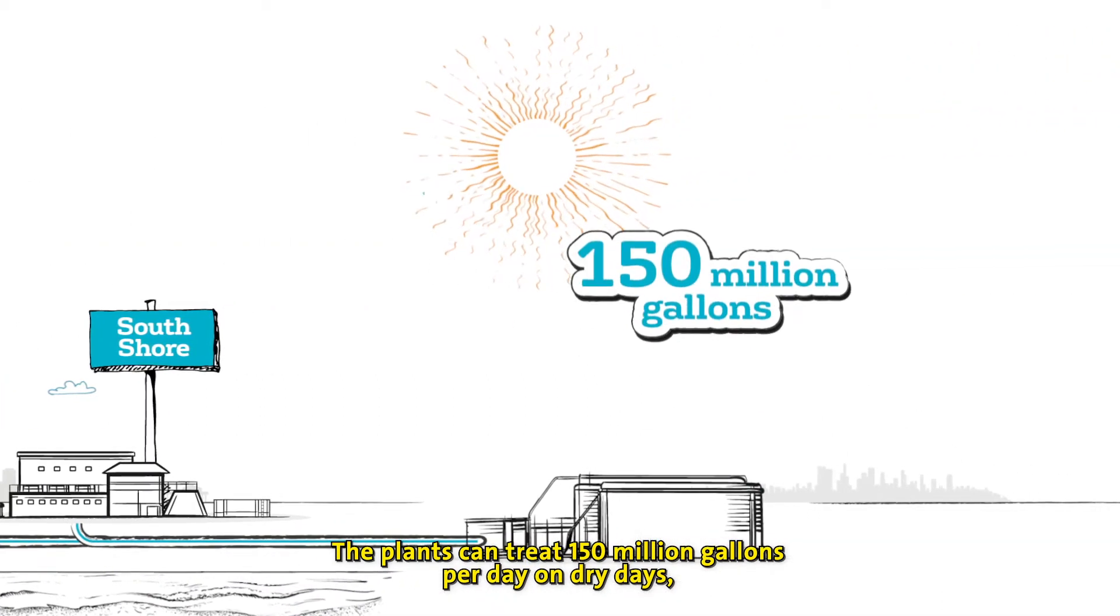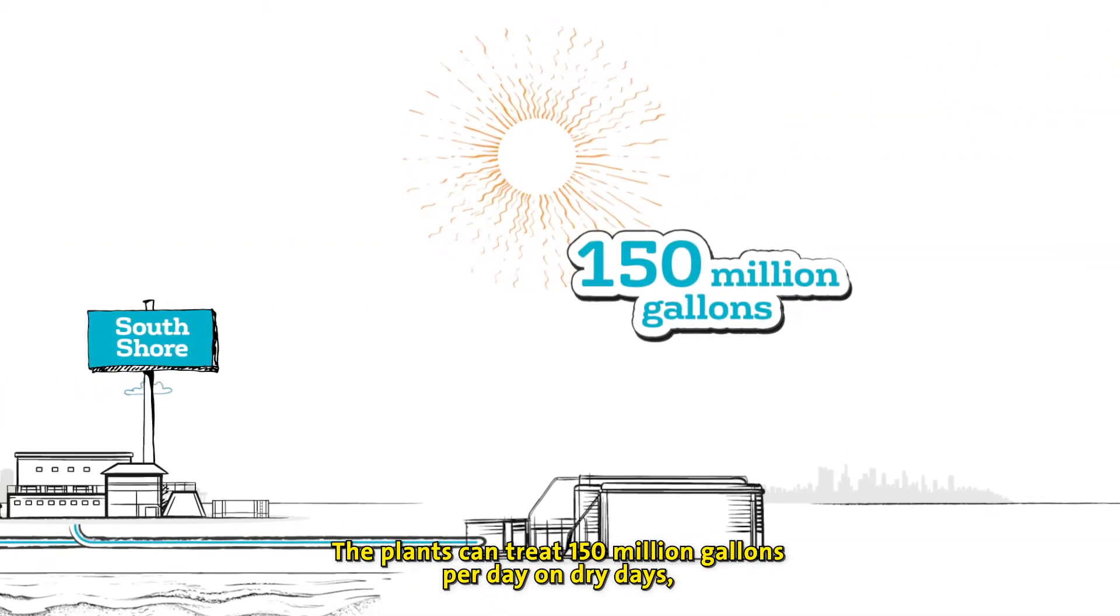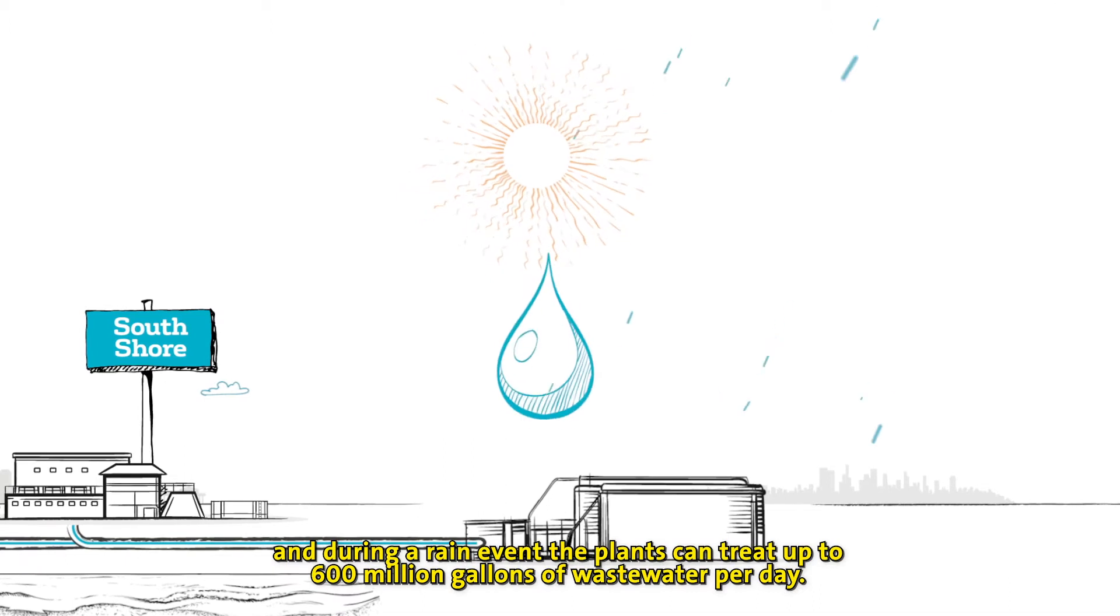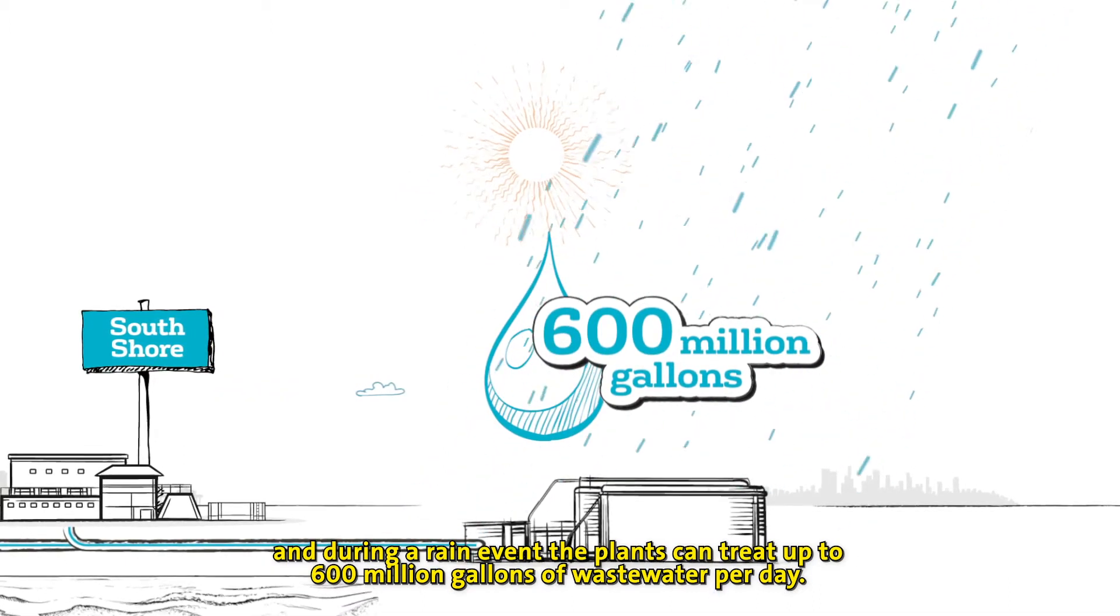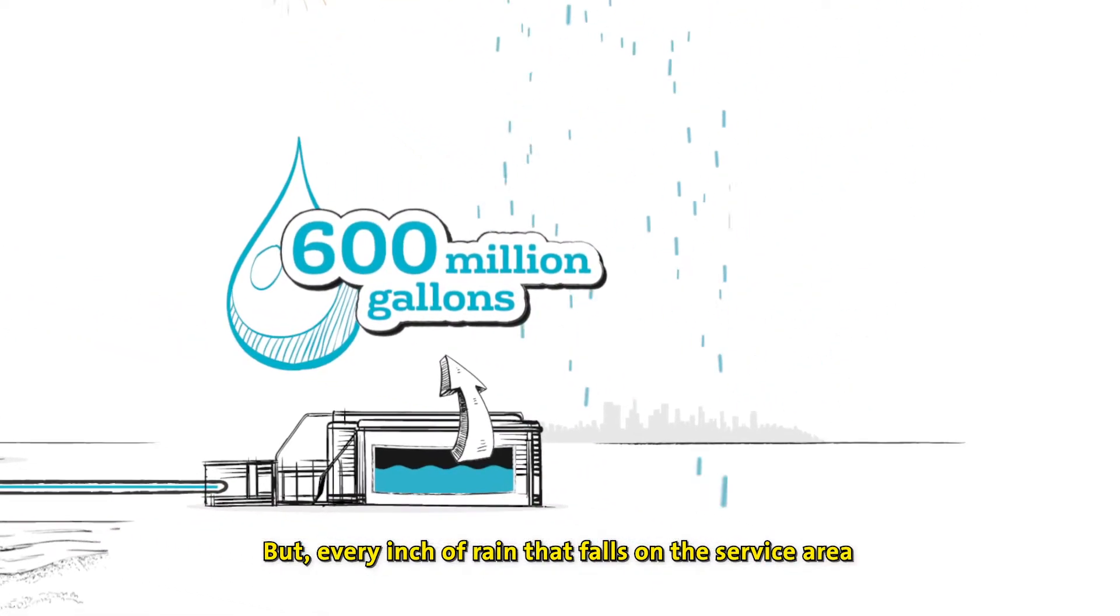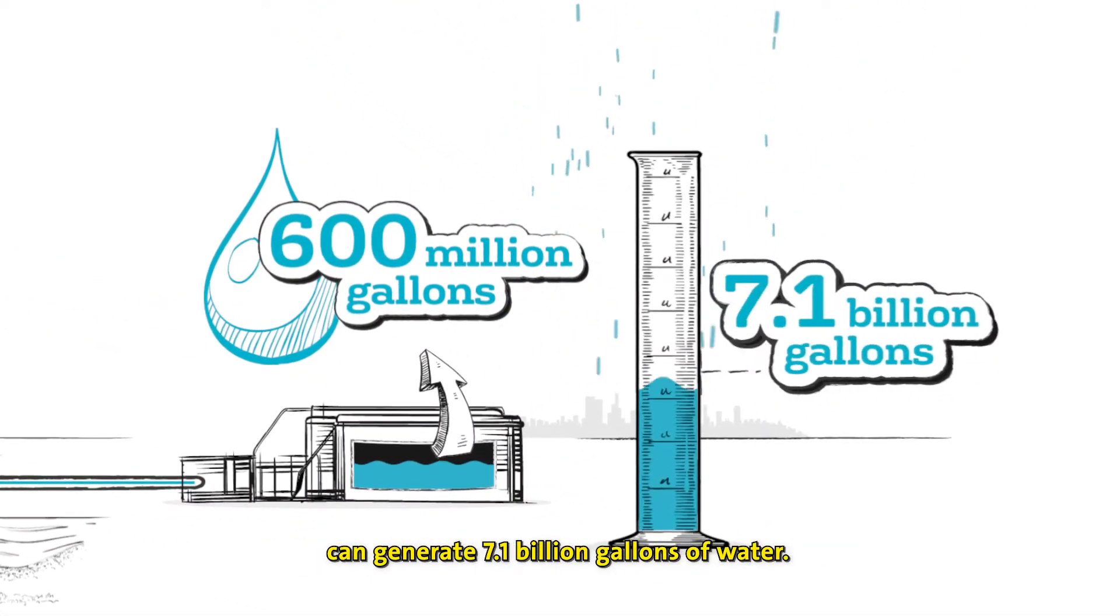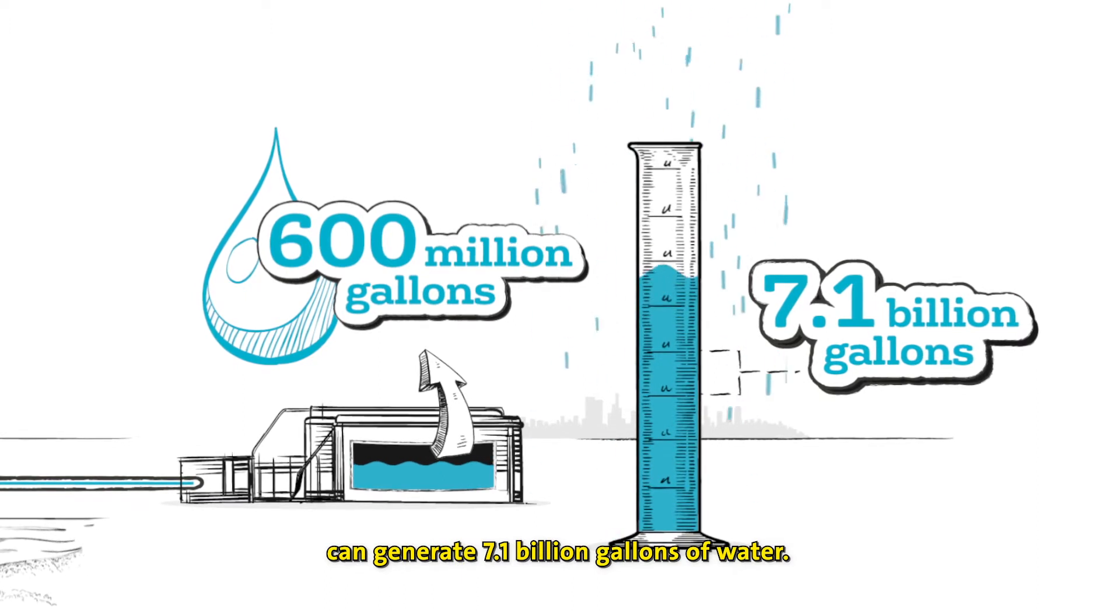The plants can treat 150 million gallons per day on dry days, and during a rain event, the plants can treat up to 600 million gallons of wastewater per day. But every inch of rain that falls on the service area can generate 7.1 billion gallons of water.